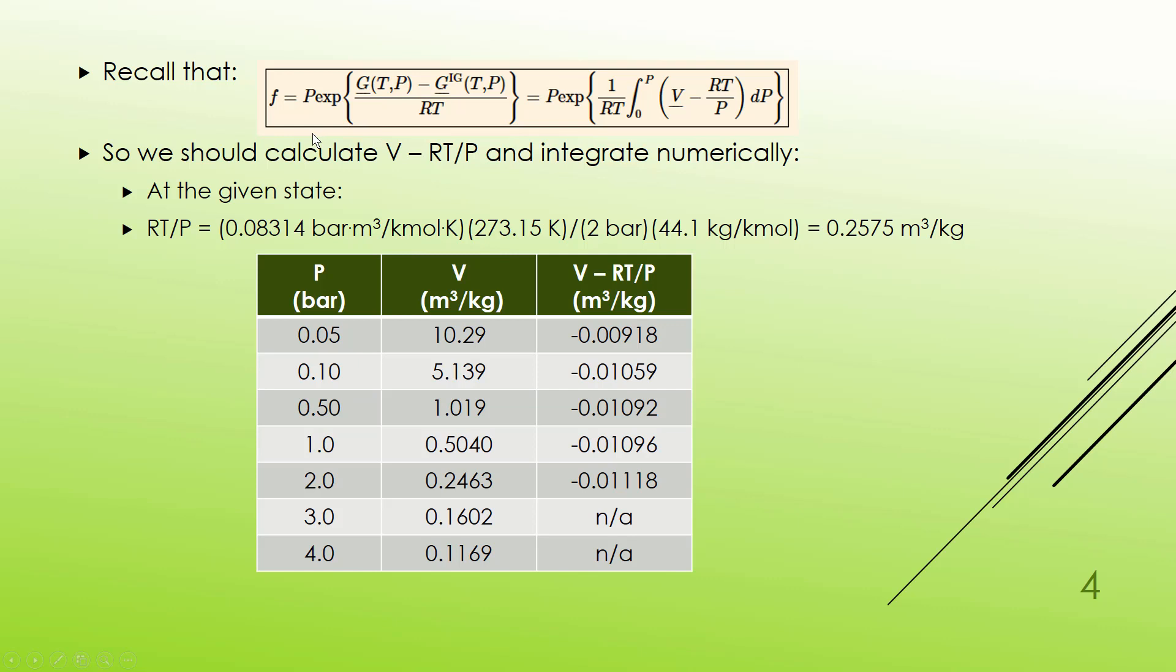Our definition of fugacity says that fugacity is the pressure times the exponential of 1 over RT, integral from 0 up to the pressure we're interested in, of V minus RT over P dP. So what we need is V minus RT over P. We'll integrate that numerically and then substitute into this formula.